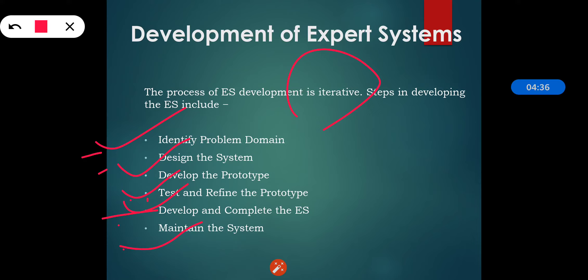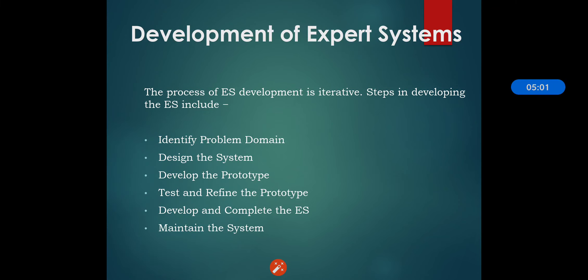We also have to cater for new interfaces with other information systems as those systems evolve. As systems evolve, the maintenance of the system requires catering to new interfaces. This is all about the development of an expert system. In our next section, we will see what is knowledge engineering. Thank you.